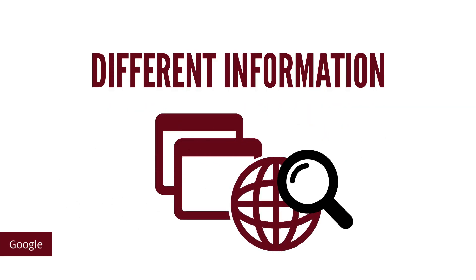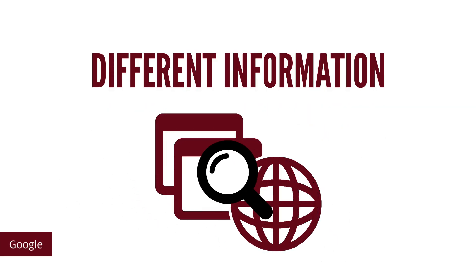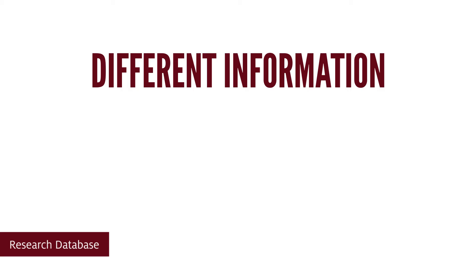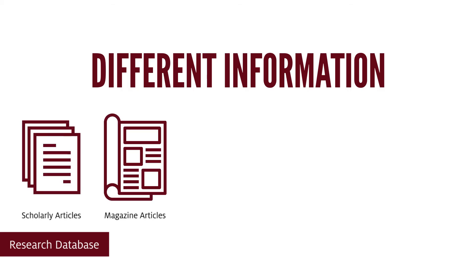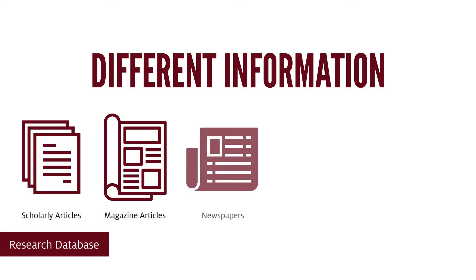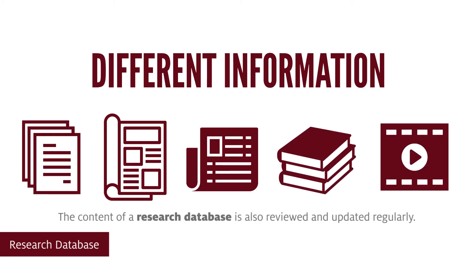Google searches for results across the internet, including websites, while research databases typically include scholarly journal articles, popular magazine articles, and newspaper books and videos. The content of a research database is also reviewed and updated regularly.